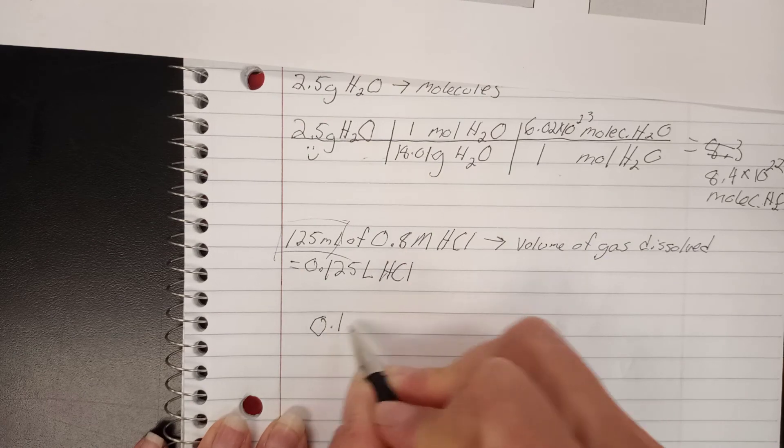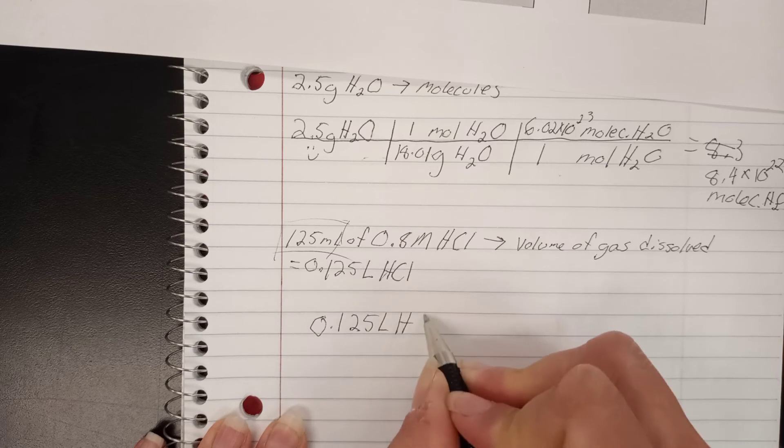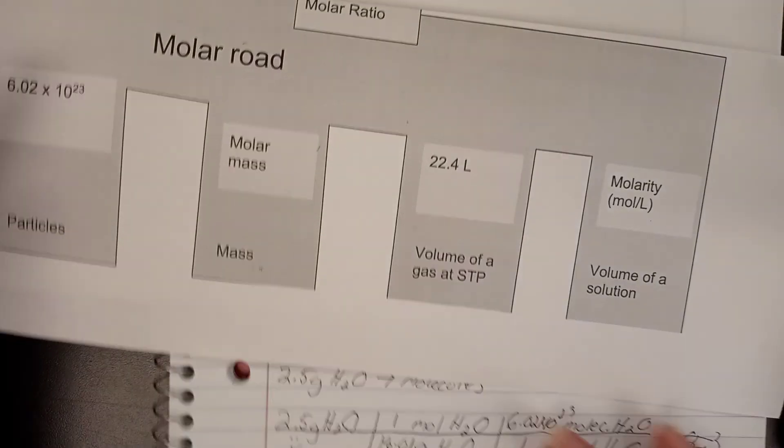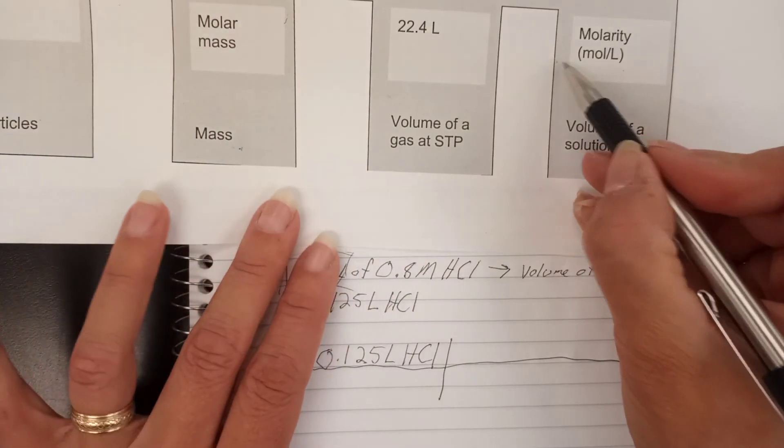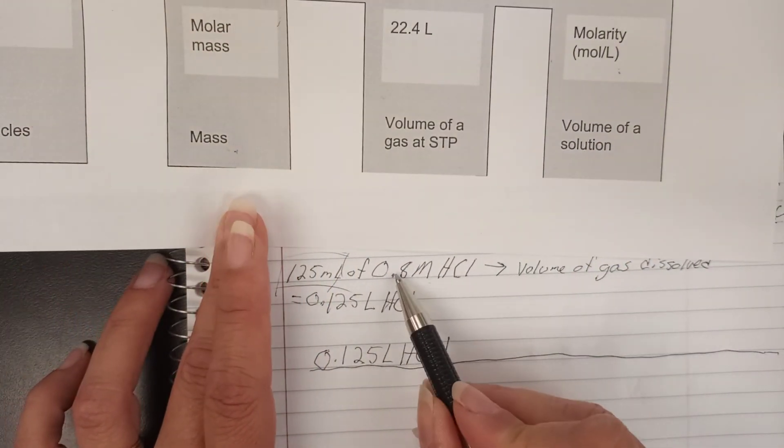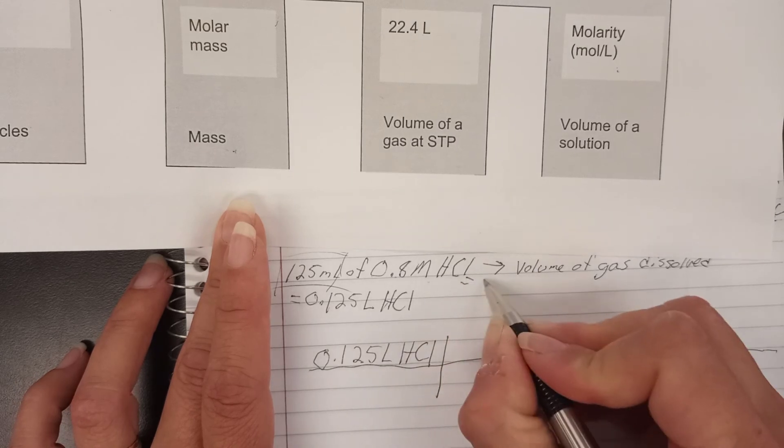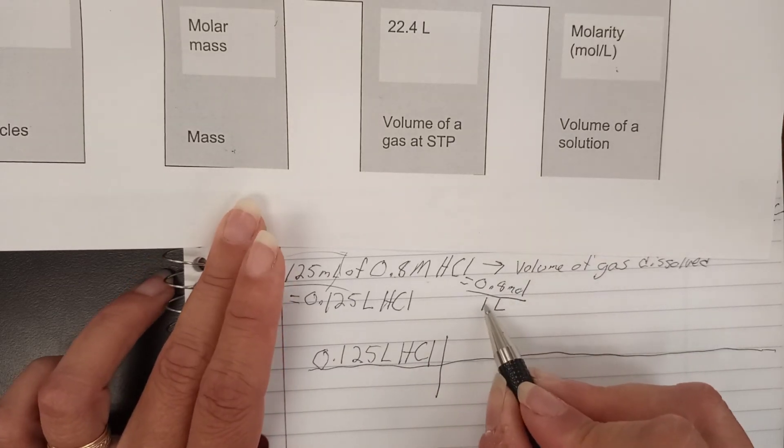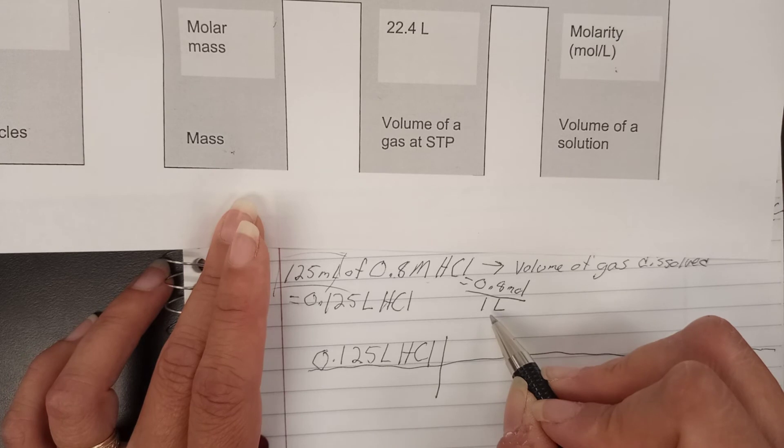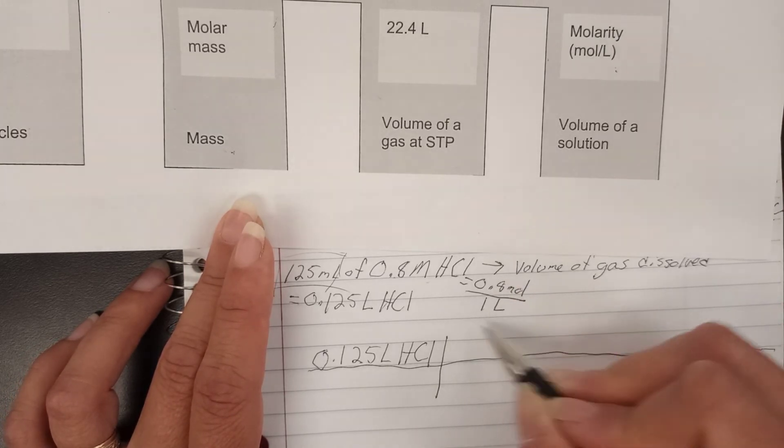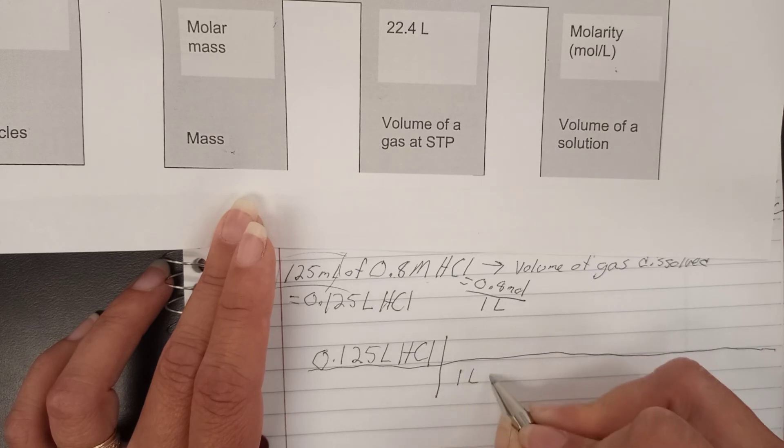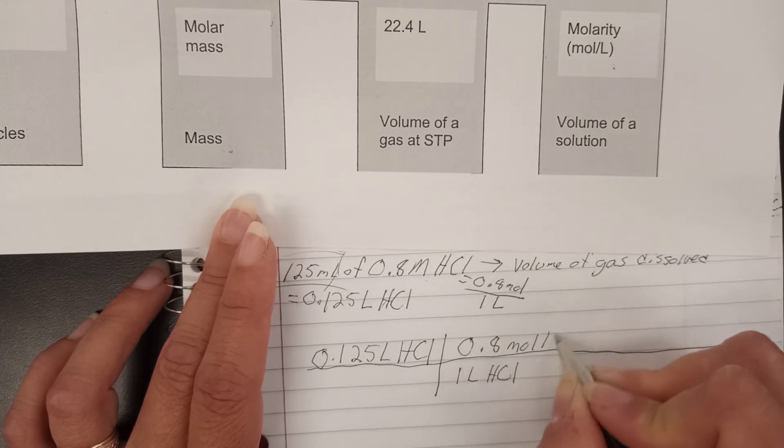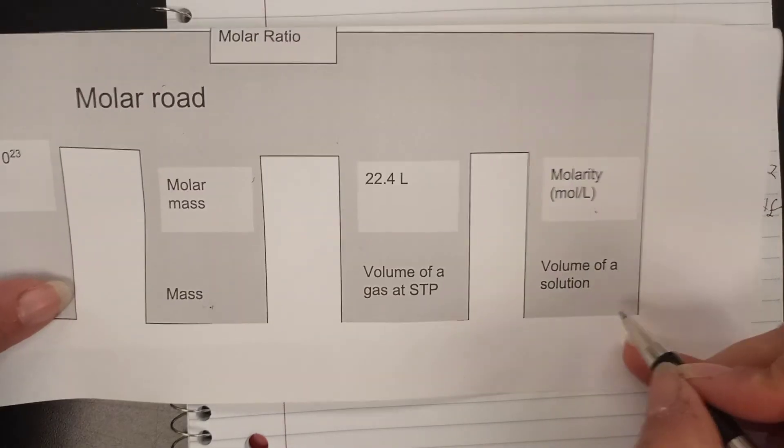My gate, my conversion factor this time, is going to be the molarity itself. This is written a little bit different. This instead is 0.8 moles over one liter. Every other time my one has gone with the moles. Molarity works just a little bit different, so I'm going to put the one with the volume, with the liters. So I'm going to write one liter HCl here, 0.8 mol HCl.